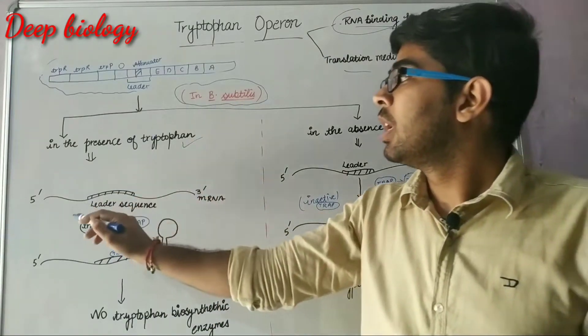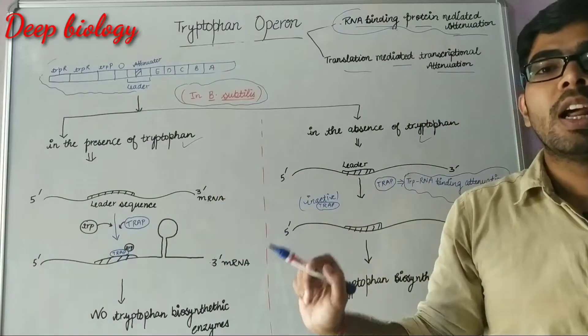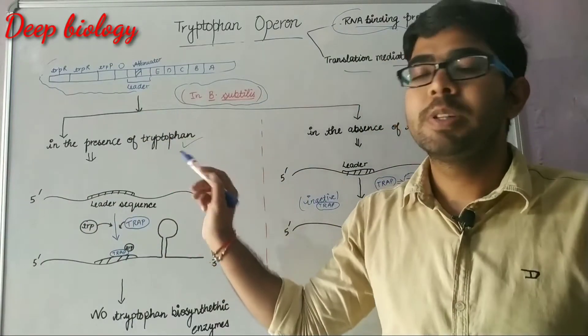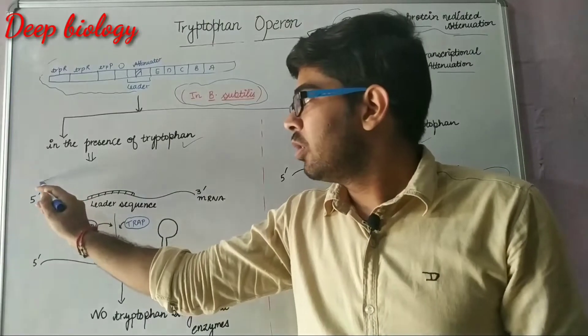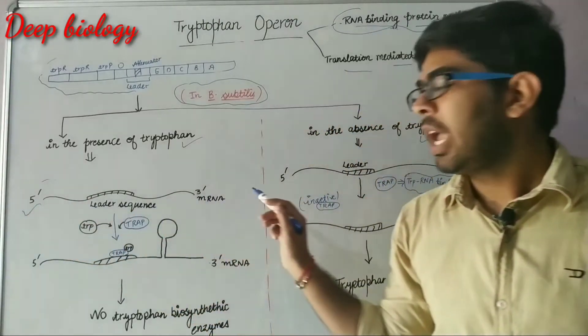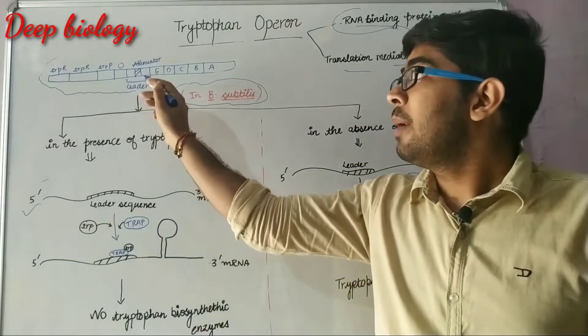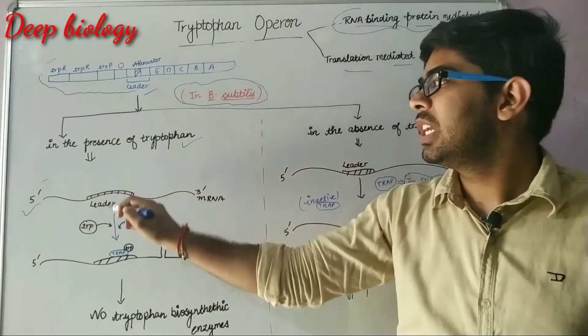first of all the RNA polymerase will carry out the transcription process and produce this mRNA. Now this mRNA has this leader sequences.